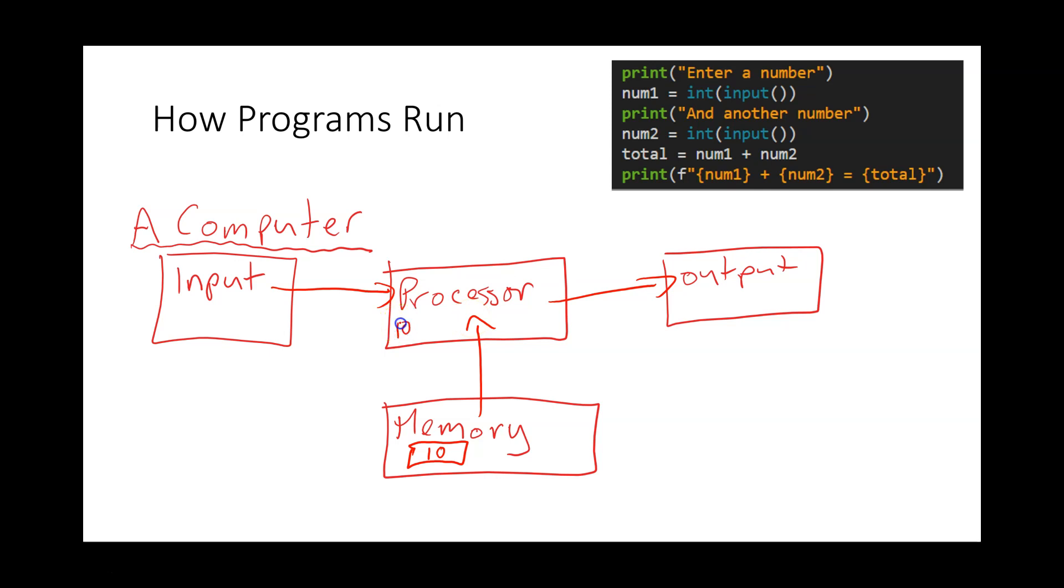It's got to work out 10 minus 1 equals 9, and then it's going to take that value and write it over the top of this value. You've now got nine bullets. It will follow more instructions, and the processor can't remember very much at all.